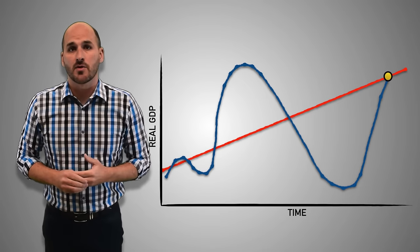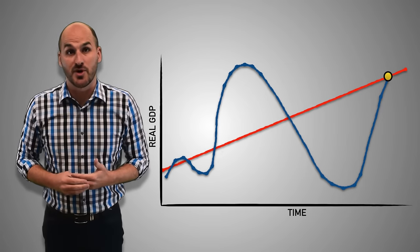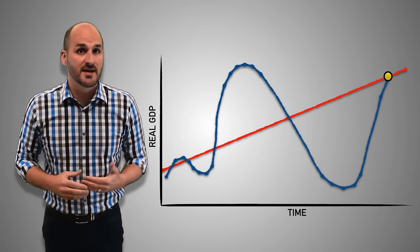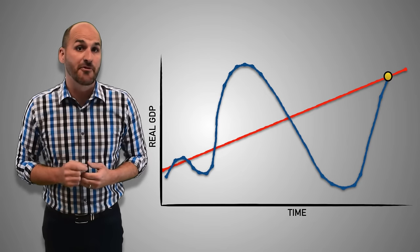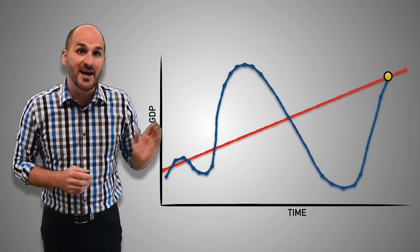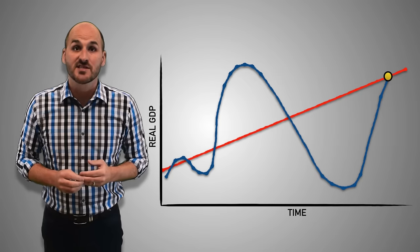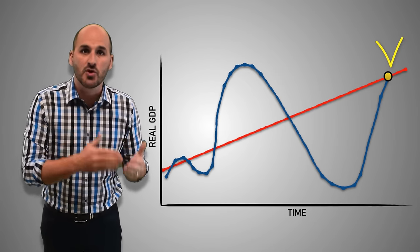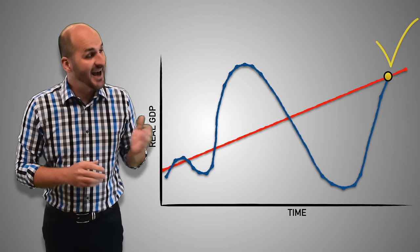So when peaks and troughs occur, the economy may return back to the growth trend line on its own. But when it doesn't, policies will be used by the federal government and the Federal Reserve to limit the peaks and the troughs in order to minimize excessive inflation and unemployment and return the economy to the optimal conditions at the growth trend line.